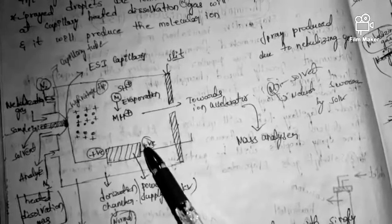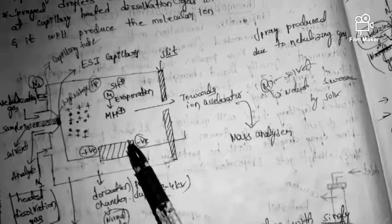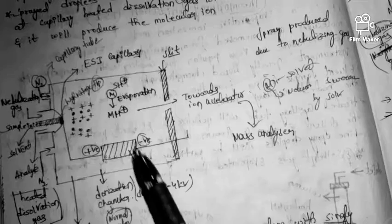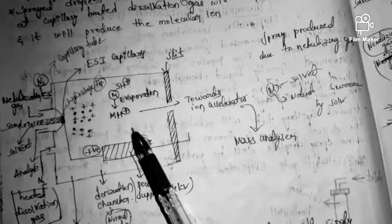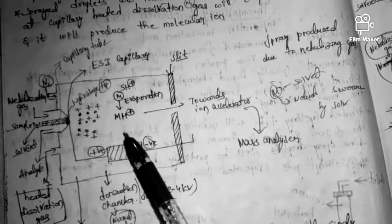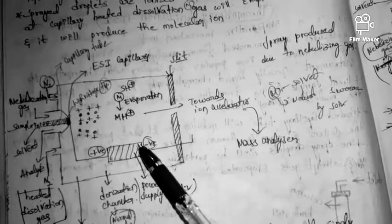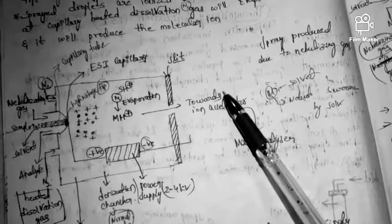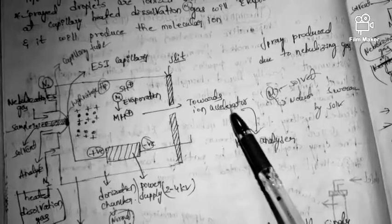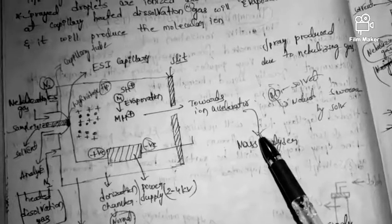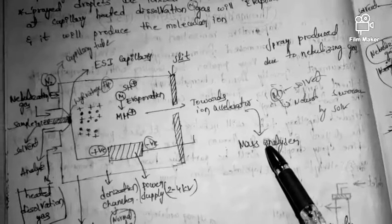A power supply of about 2 to 4 kilovolts is applied at the ionization chamber. Solvent evaporation occurs, and the ions move toward the ion accelerator. Finally, the accelerated ions enter into the mass analyzer.